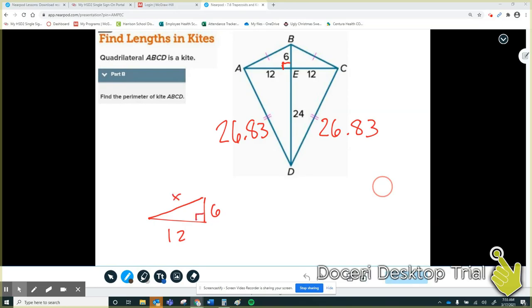So I plug in my Pythagorean theorem. 6 squared plus 12 squared equals X squared. 6 squared is 36, 12 squared is 144.